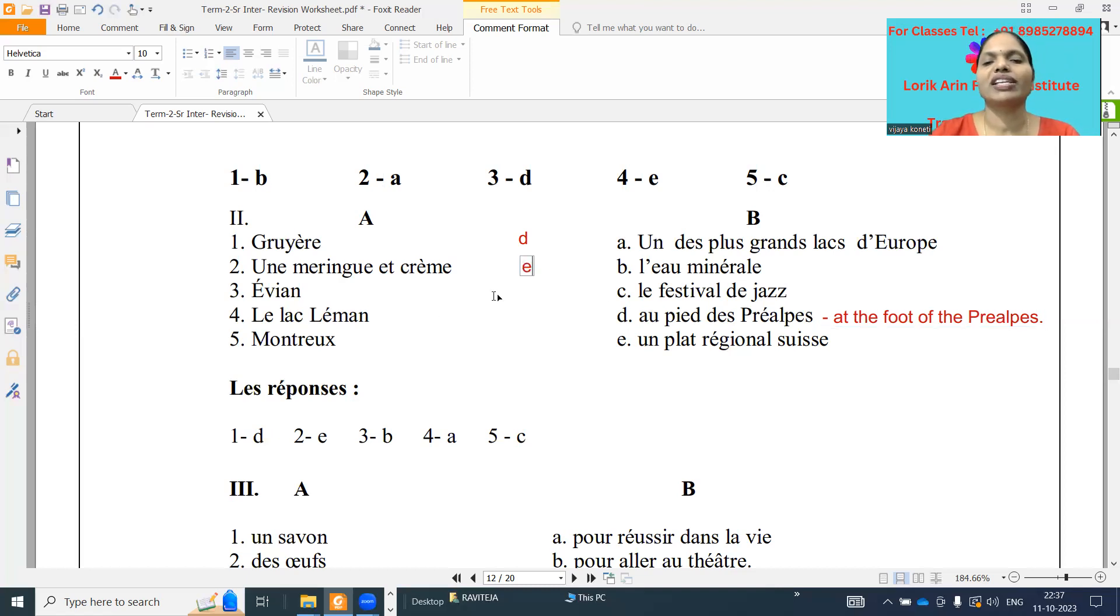Next one, Evian. Evian is important for l'eau minérale. Mineral water and casino, it is important. So mineral water. So Evian it is, what it is? B. Evian it is there. We need to mark the B option.